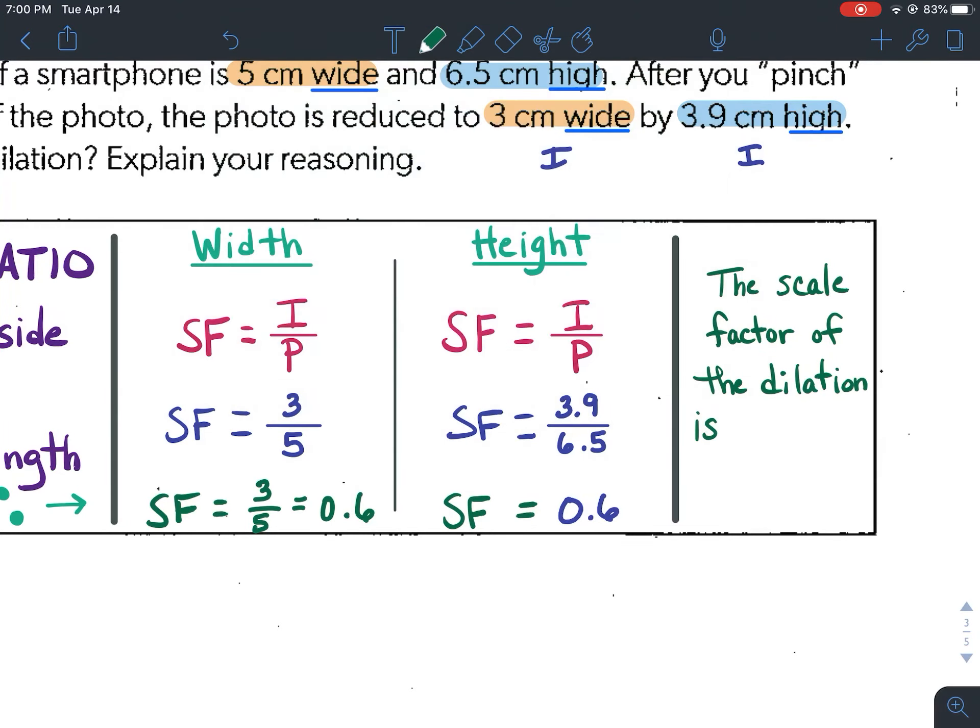All right, so for our final answer, the scale factor of the dilation is 3 fifths or 0.6.